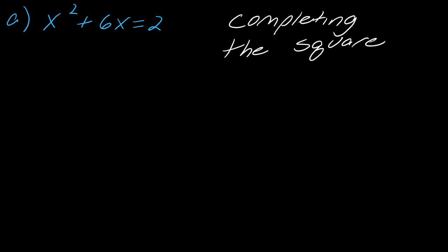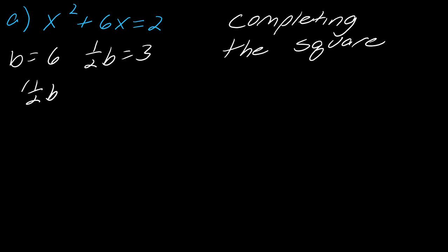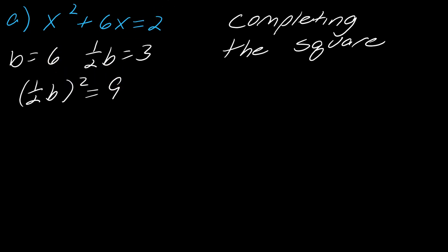Starting with problem A, we already said we want to complete the square. I've left this in its original form because that's the form we want for completing the square. We need to identify our b, which is 6, then take half of that, which is 3, and then take half b squared, which is 9. If you aren't sure how to do this, I do have videos on it — this is a review video, so feel free to check out one of my other videos.